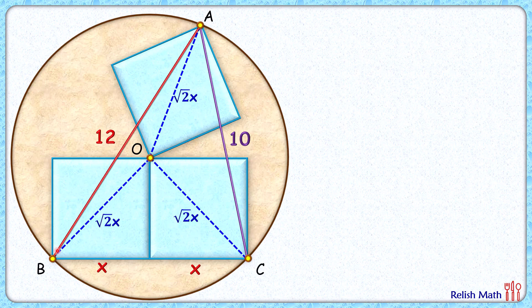Also we know that diagonal of a square makes an angle of 45 degrees with the side, so this angle is 45 degrees and this angle here is also 45 degrees.